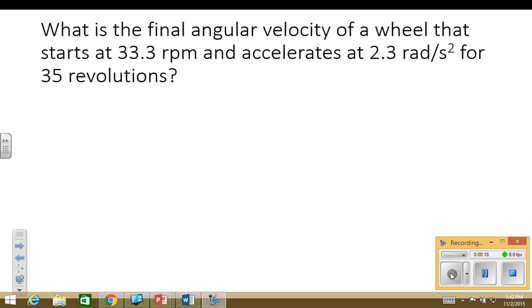So let's write down what we know so we can pick out an equation. In this one we know that we have an initial velocity, omega i, of 33.3 revolutions per minute.